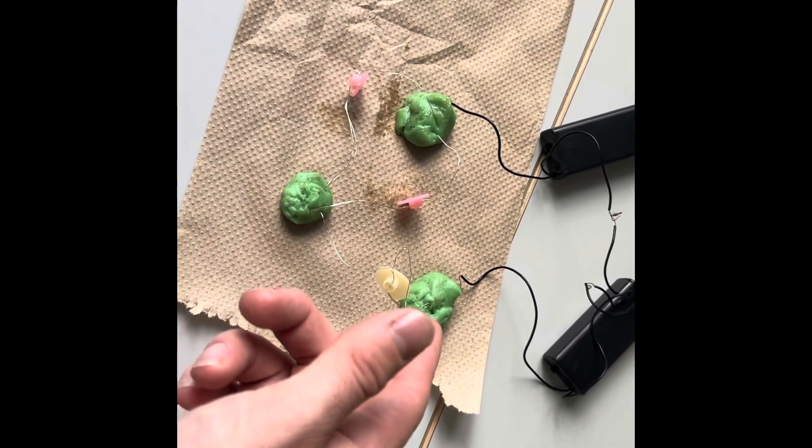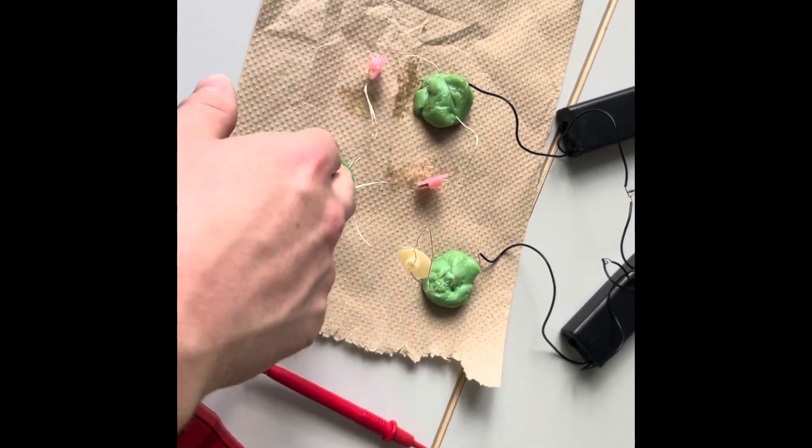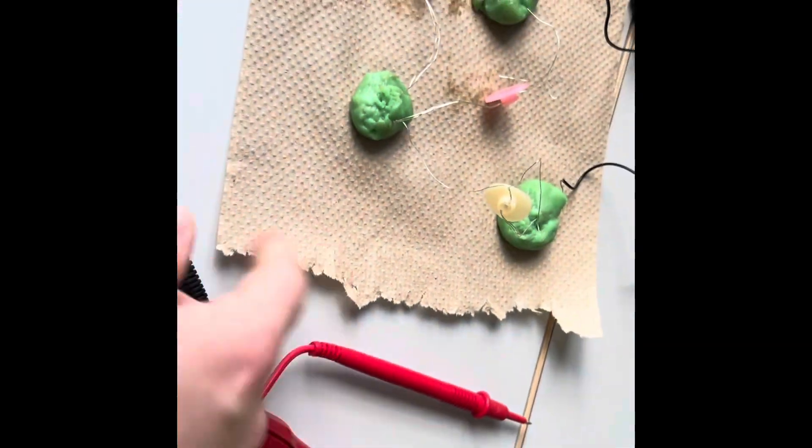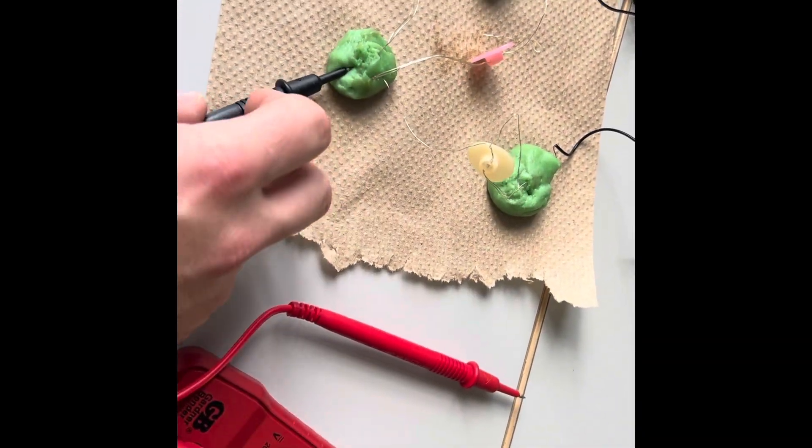Now we've gone ahead and done the full series/parallel circuit. We have the two lights going from here to here, the one there. As you can see, there is no brightness at all due to it being non-conductive.